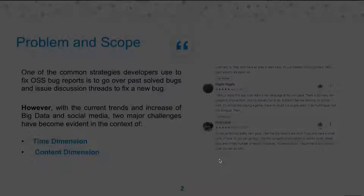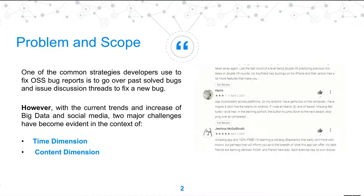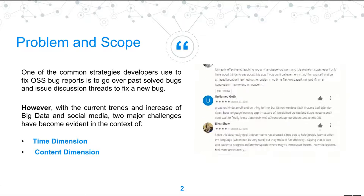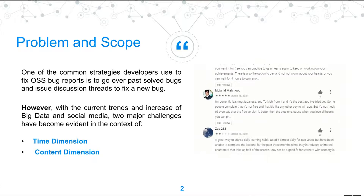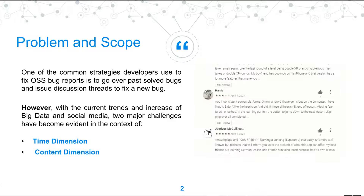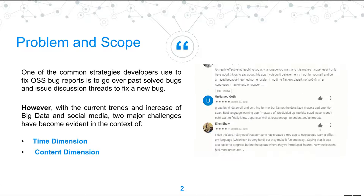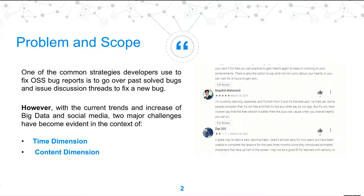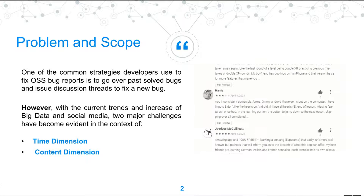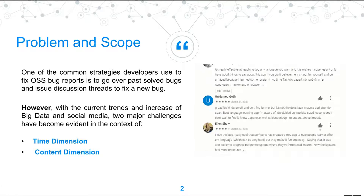So what is the problem and the scope of this paper? When developers investigate a new bug report, they search for similar previously fixed bug reports and discussion threads attached to them. Usually these discussion threads convey important information about the behavior of the bug, including relevant bug fixing comments. However, with current trends in big data and social media, these discussion threads become extensively lengthy, leading to two major dimensions of problems: the time dimension and the content dimension.